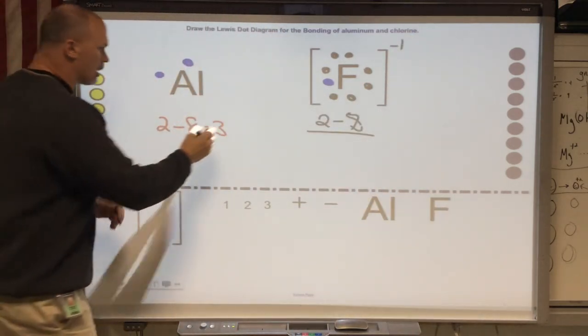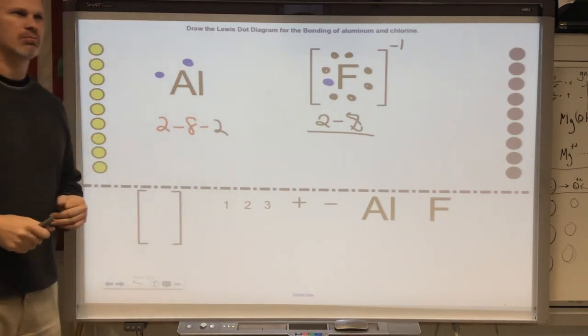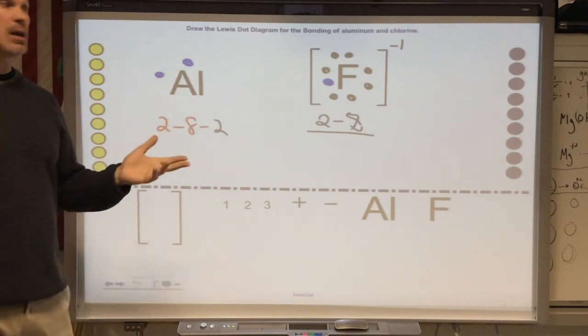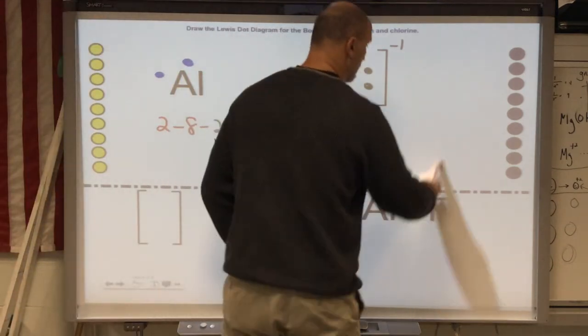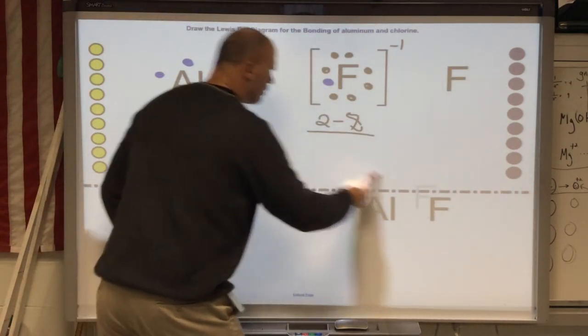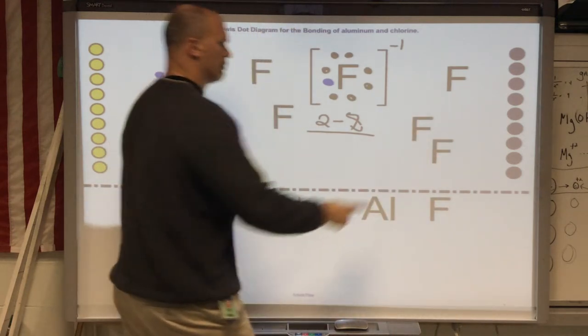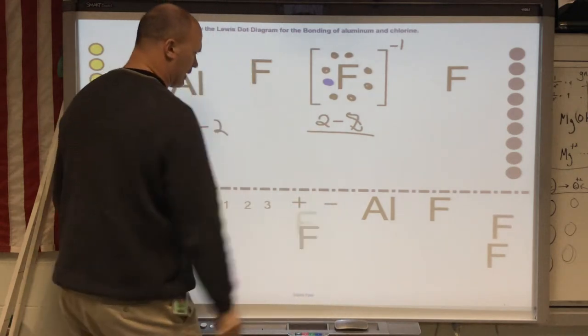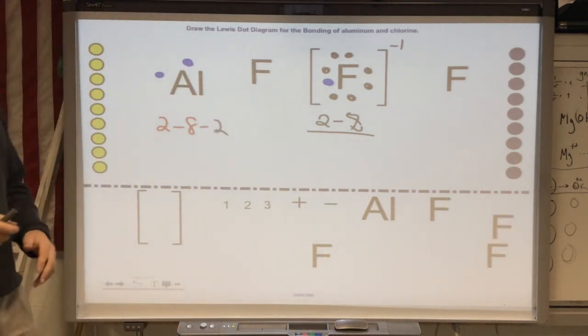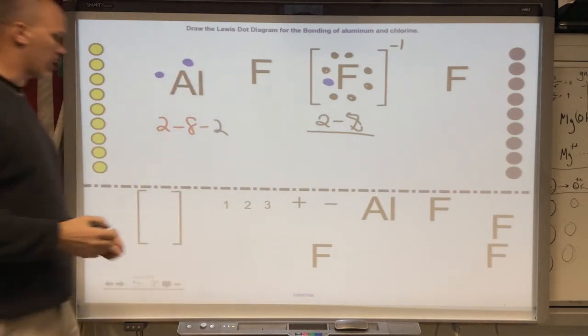Now, this guy lost one. So, now it's 2-8-2. No good. It's got to do what? Lose all of them. Lose all of them. So, what am I going to need? Another F, I guess. Two Fs? One F? Four Fs? Just bounce them around. I like when they bounce. So, why do I need two more Fs? Because each F is going to do what? Take one more. Correct.